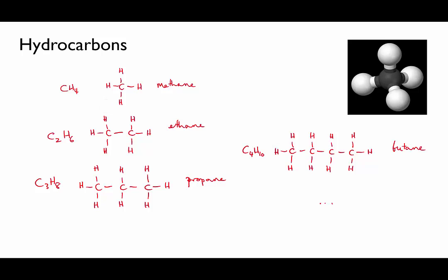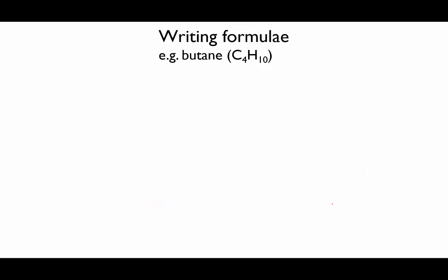Now, before we go any further, we need to look at a couple of ways of drawing these molecules, because they become quite large. So the simplest way of representing a molecule is the molecular formula that you already know. This has the advantage of being easy to write, but it gives you no information about how the atoms are joined to each other. So butane, for instance, would be written as C4H10.